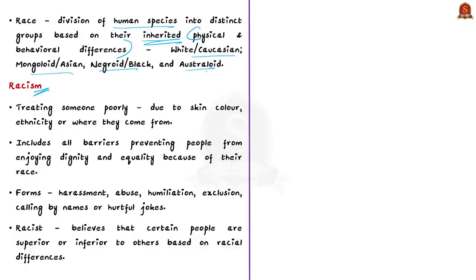Racism means to treat someone poorly because of their skin color, ethnicity, or where they come from. Racism takes many forms like harassment, abuse, humiliation, exclusion, calling someone by names, or even using hurtful jokes. In short, racism includes all the barriers that prevent people from enjoying dignity and equality because of their race.